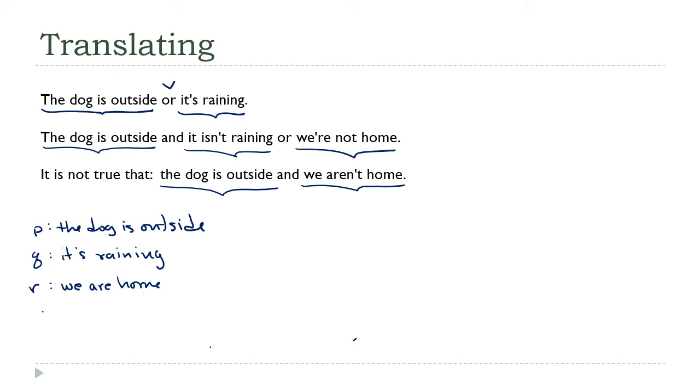So now I can think about doing the translation here. Remember, 'or' is a V and 'and' is the upside down V. So this first statement would be p ∨ q. The second would be, let's see, 'the dog is outside' - that's p - 'and it isn't raining' - so that's ~q - 'or we aren't home' - that's ~r. There's the translation.